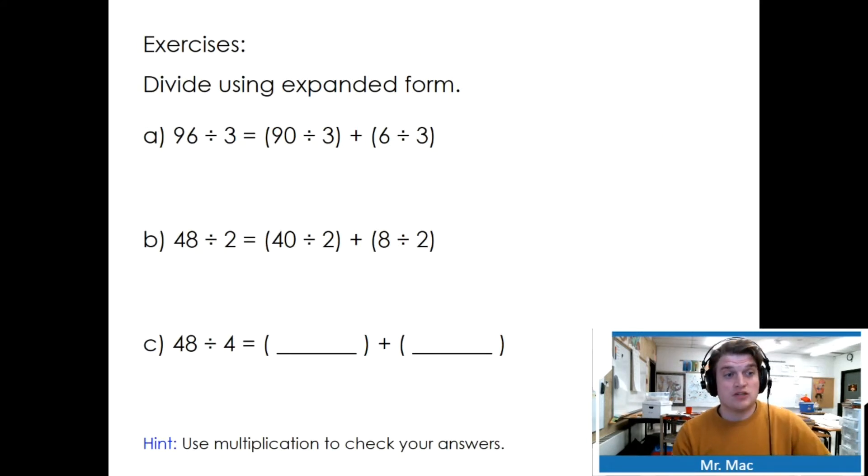Divide using expanded form. So remember to do the brackets first. 96 divided by 3 is the same as 90 divided by 3 plus 6 divided by 3. So 6 divided by 3, if I skip count by 3's: 3, 6, so the answer is 2. 90 divided by 3, I'm just going to pretend it's a 9 for now. Skip counting by 3's to 9: 3, 6, 9. So I know my tens is 3, three tens. Find the sum: 32.